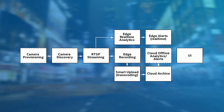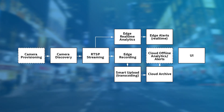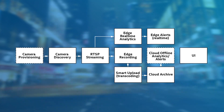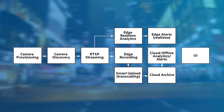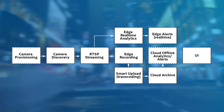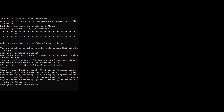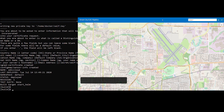Intel implements a complete end-to-end flow including edge components, camera discovery, streaming and analytics, and cloud components such as archival and web UI. This solution is integrated with Intel Openness, an open source reference toolkit that makes it easy to move applications from the cloud to the network and on-premise edge.